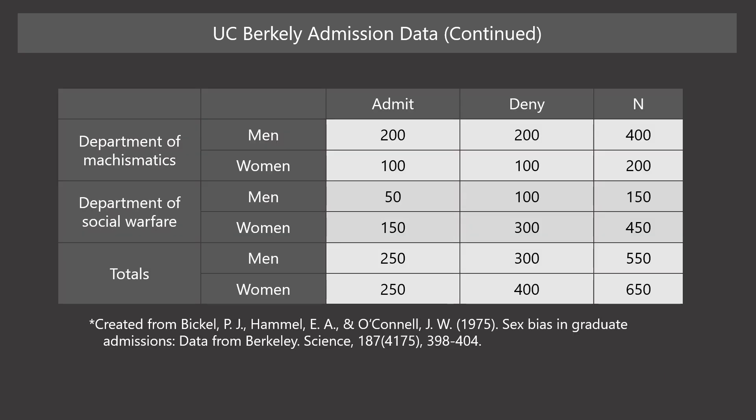This table illustrates the phenomenon by using two hypothetical university departments. In both departments, the admission rates of men and women are exactly equal. In mathematics, 50% of males and 50% of females were admitted. In social welfare, 33% of males and 33% of females were admitted. Based on the admission rate, we can say that social welfare is more difficult to get into than mathematics. While there are more males than females in mathematics, there are more females than males in social welfare.